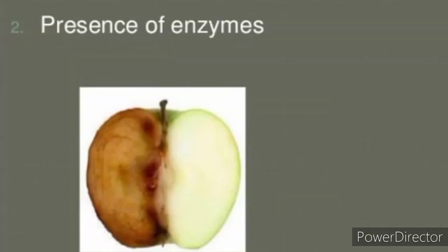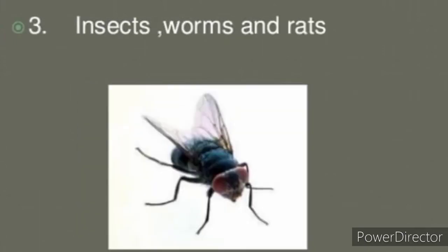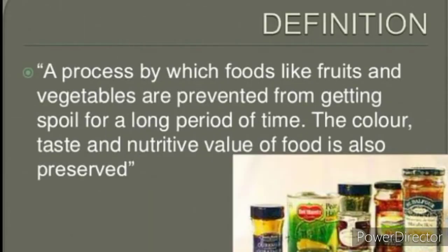Presence of enzymes in the food also causes spoilage. Presence of insects, worms, and rats also causes food spoilage — they release various substances in the food which are poisonous for humans, so these also cause food spoilage.